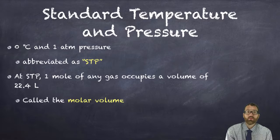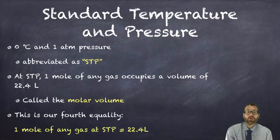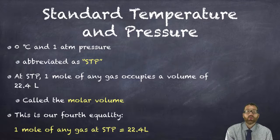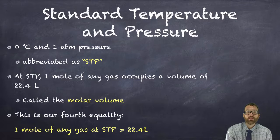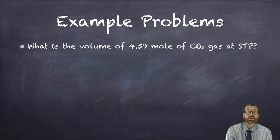Now this is a number you do need to memorize. This is our fourth equality: one mole of any gas, assuming that gas is at STP, will take up 22.4 liters of volume. So if this is an equivalency, we can use it in a conversion factor to convert from moles to volume or from volume to moles of any gas at STP. So let's do some examples.